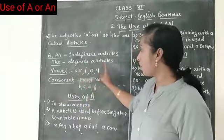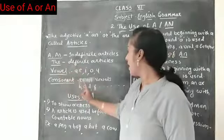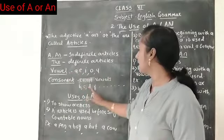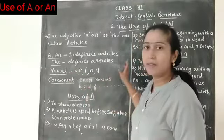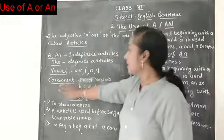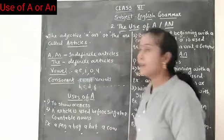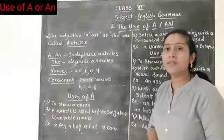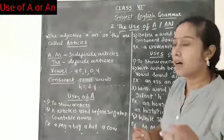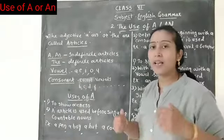So A, E, I, O, U are the vowels, and all other letters like B, C, D, E, F, J are consonants. Now let's see how we use the article A.